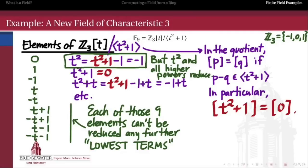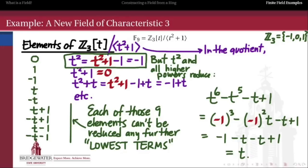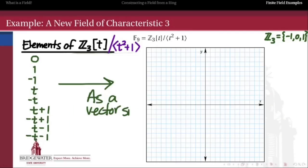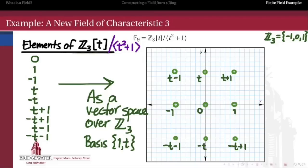For example, if I have some larger polynomial in Z mod 3 adjoined t — maybe of degree 6 — I reduce it by replacing every t² with -1, and when all of that is settled, we find the representative in the quotient. As a vector space, we have two linearly independent polynomials to start: the degree-0 polynomial 1 and the degree-1 polynomial t. Here are our nine elements arranged to show the vector space structure over Z mod 3, with basis 1 and t — constant polynomials on the x-axis, multiples of t on the y-axis. So this is a two-dimensional vector space over Z mod 3.